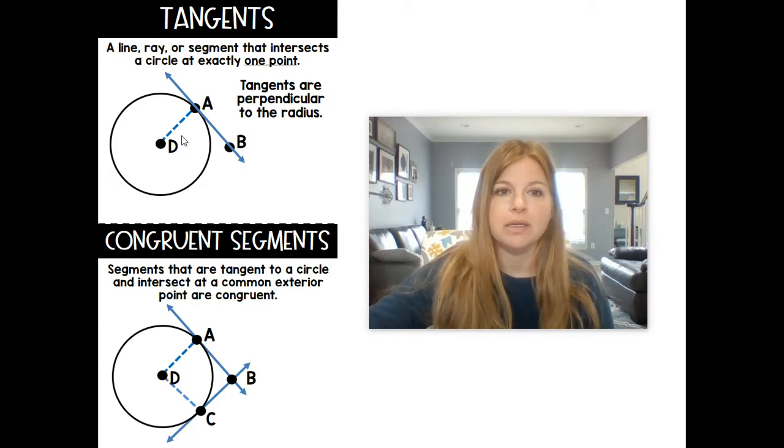So here in this diagram, this is a tangent. It would be line AB. And line AB is tangent to circle D because it intersects the circle at exactly one point, this point A. And it's also perpendicular to the radius. It's always going to have those two things in common.